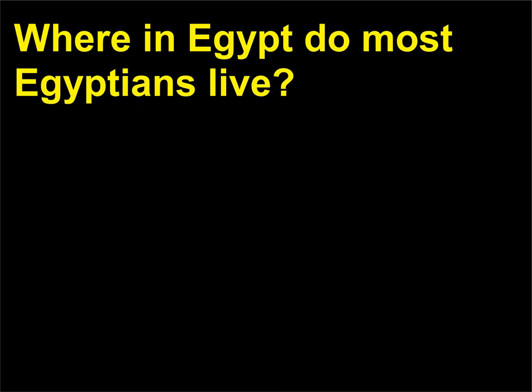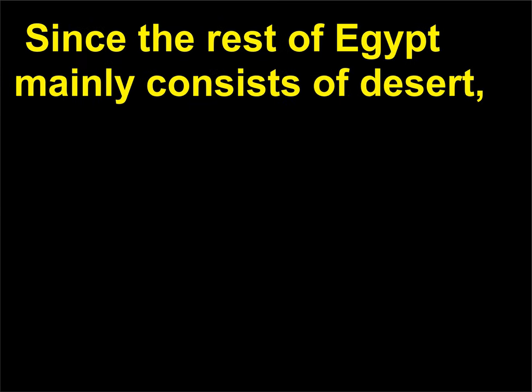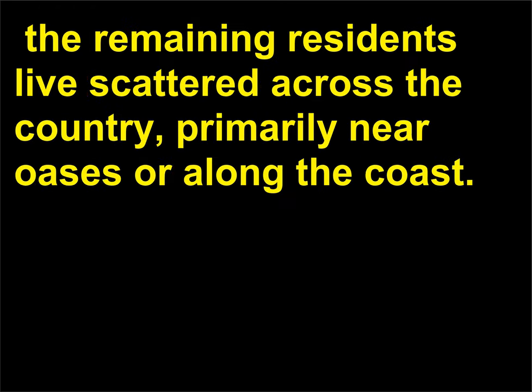Where in Egypt do most Egyptians live? About 95% of Egypt's population lives within 12 miles of the Nile River, since the rest of Egypt mainly consists of desert. The remaining residents live scattered across the country, primarily near oases or along the coast.